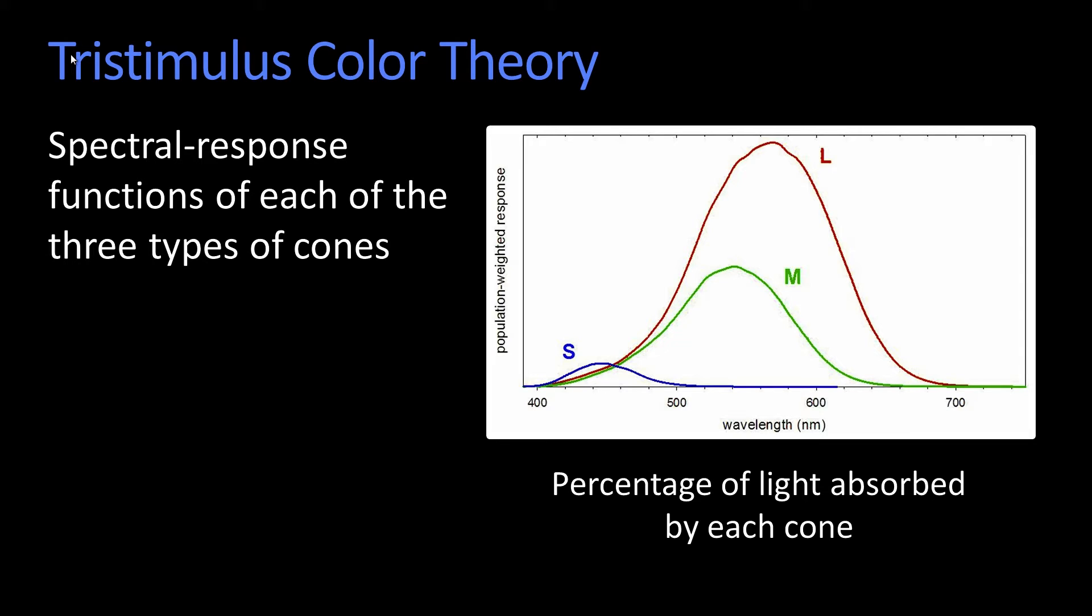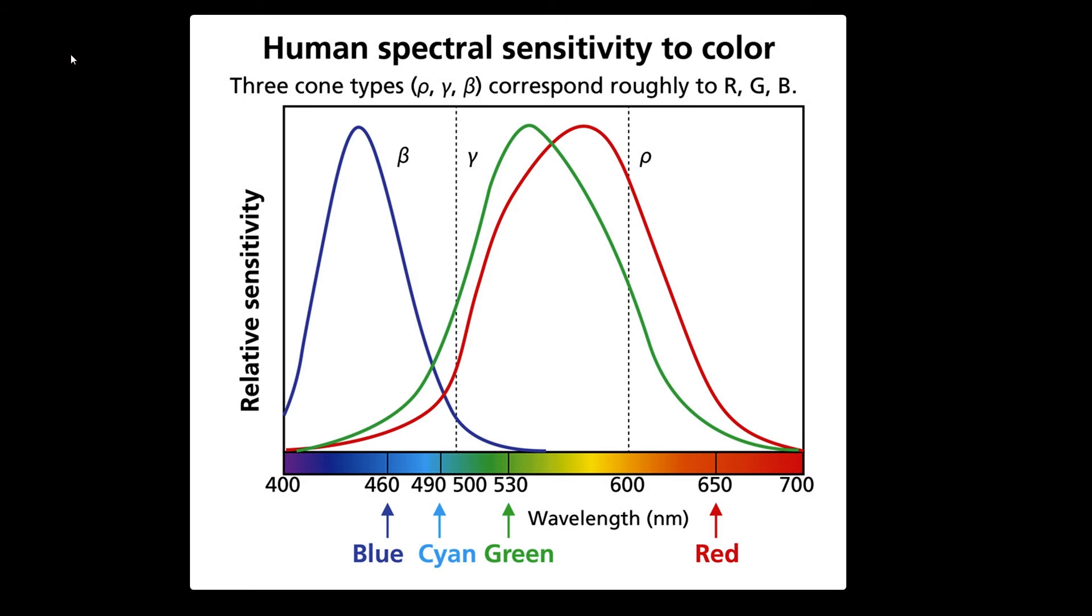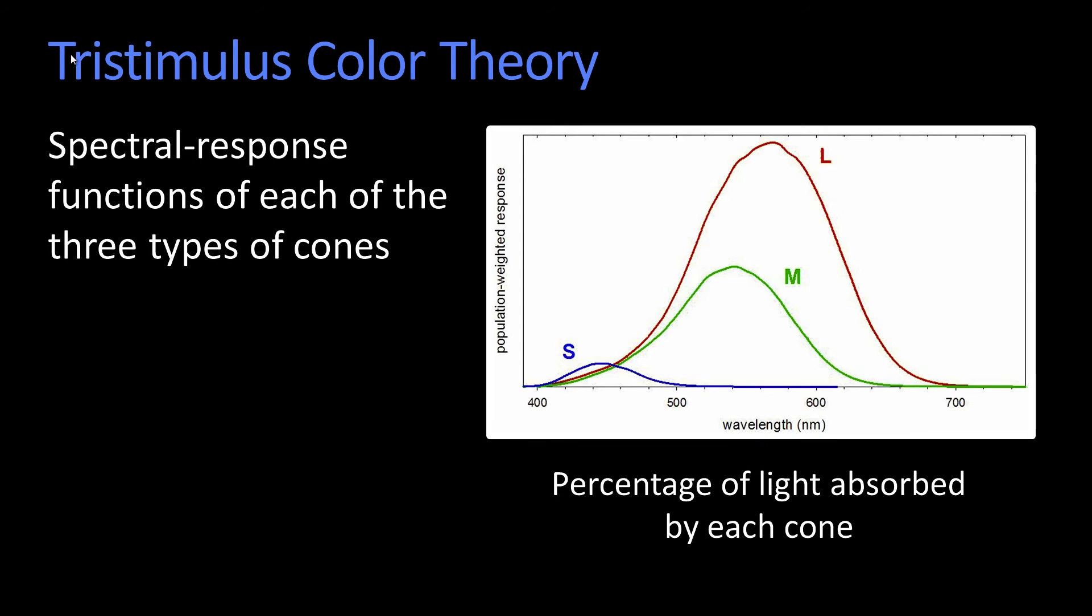And here it says the spectral response of each of the three types of cones. Unlike the previous one where we're showing you the relative sensitivity of each of them, what this graph is showing you, just as it says, is the percentage of light absorbed by each cone type.